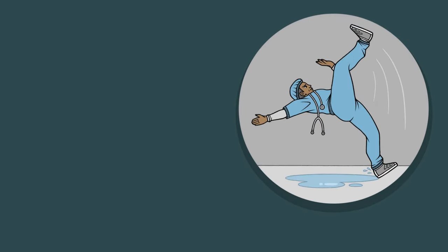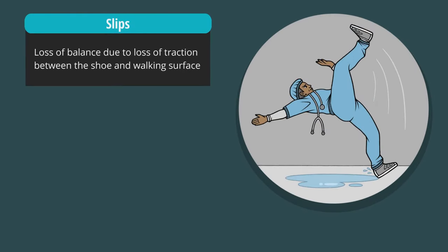There are a number of ways that slips and trips can occur. Slips are the loss of balance due to loss of traction between the shoe and walking surface. Your center of gravity pushes beyond its boundaries resulting in a fall.